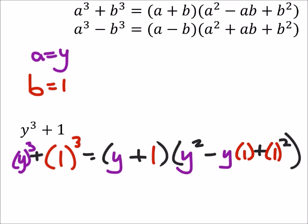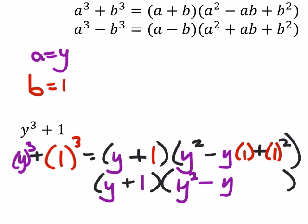And we can simplify these. This first one is still just going to be y plus one. But in the second set, we got y squared minus y times one is just y, and then plus one squared, which is one.